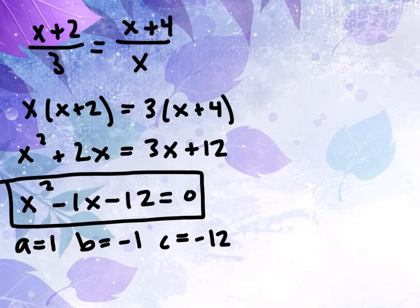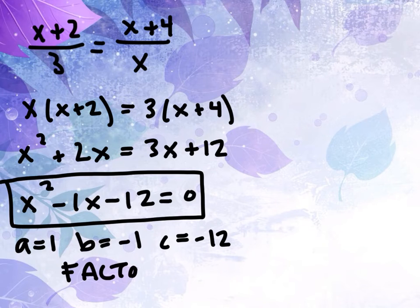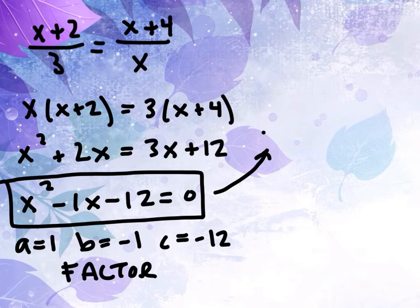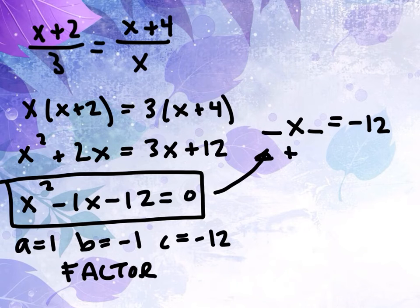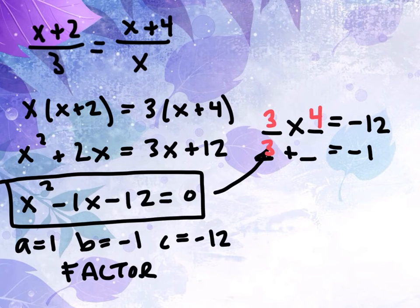Another way to do this is to factor it. You might want to try and factor it. To factor, we would be looking for two numbers that multiply to negative 12, but also would add together to give you negative 1. I see how a 3 and a 4 would be helpful in this.